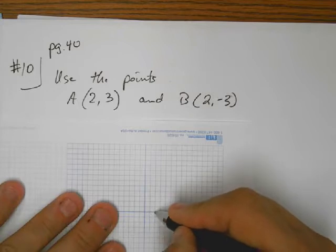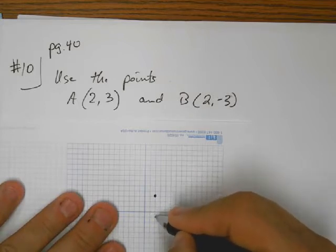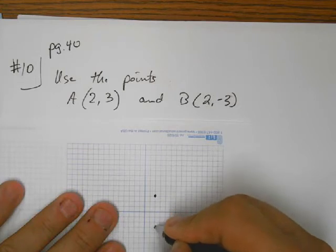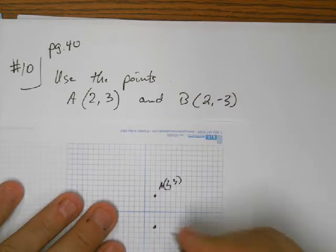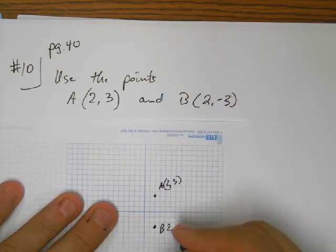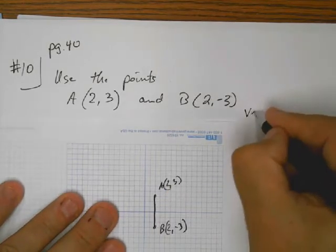So we go 1, 2, and then 1, 2, 3, and then 1, 2, and then 1, 2, 3. So here is A at 2, 3. You guys see that okay? Good. And here is B at 2, negative 3. This looks like a vertical line.